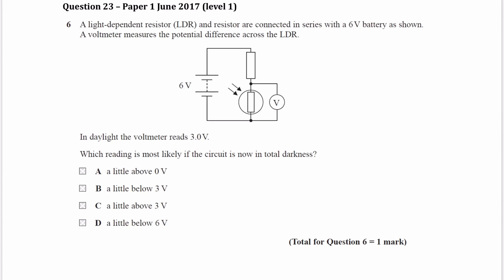In daylight, the voltmeter reads 3 volts. In daylight, what this means is the resistance of the LDR would be very low. With greater light intensity, you would have a lower resistance of your LDR.